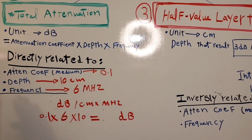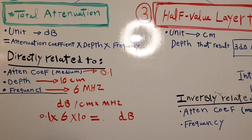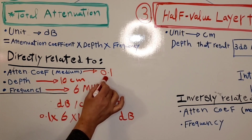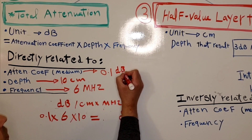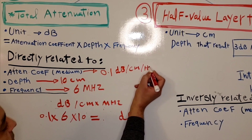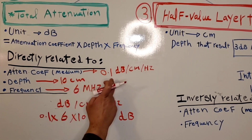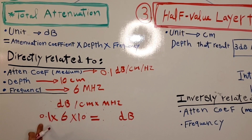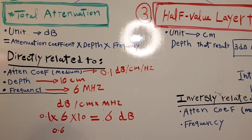If the exam gives you a specific attenuation coefficient for the medium, use that value instead of assuming soft tissue. For example, with an attenuation coefficient of 0.1, a frequency of 6 megahertz, and a depth of 10 centimeters: multiply 0.1 by 6 to get 0.6, then 0.6 times 10 equals 6 decibels.